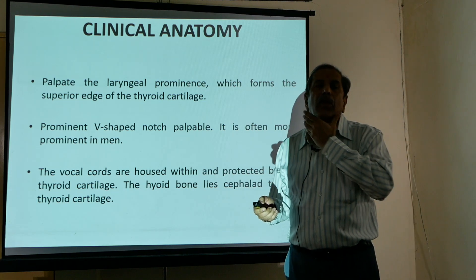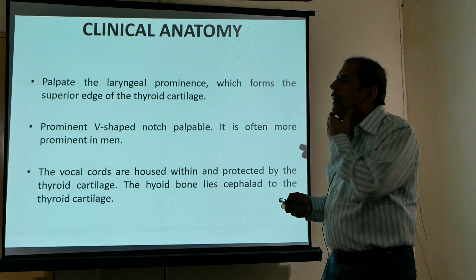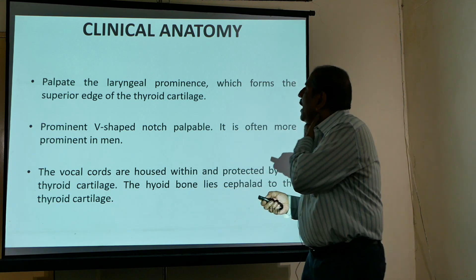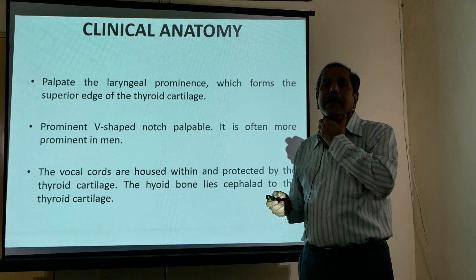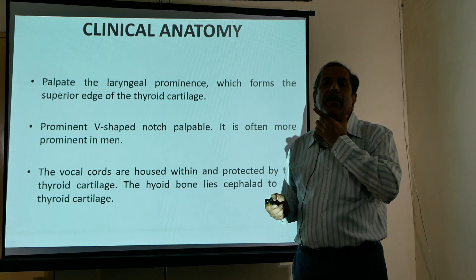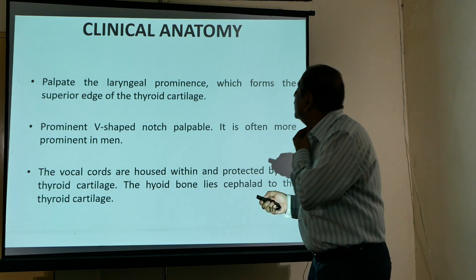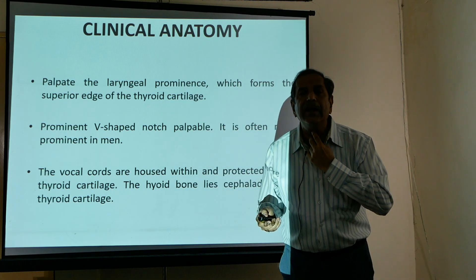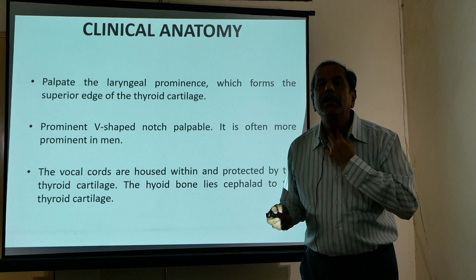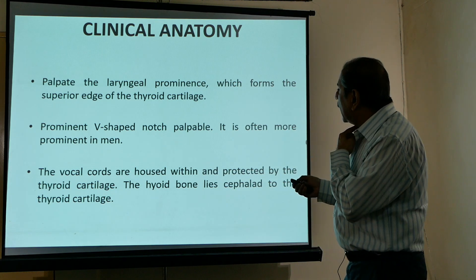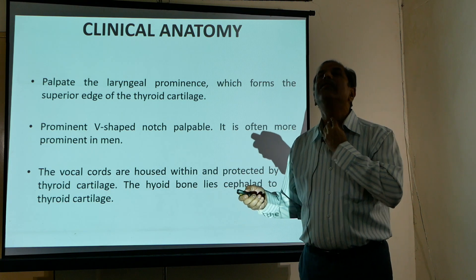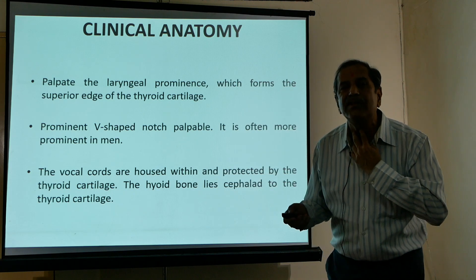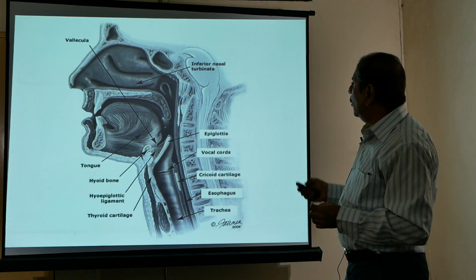To identify the cricothyroid membrane, place your non-dominant hand on the patient's neck and palpate the laryngeal prominence using the middle finger and thumb. You will find the V-shaped thyroid cartilage — it moves when you swallow. Below that, passing your finger in the midline, there are rings, and the depression just after the thyroid cartilage is the cricothyroid membrane.